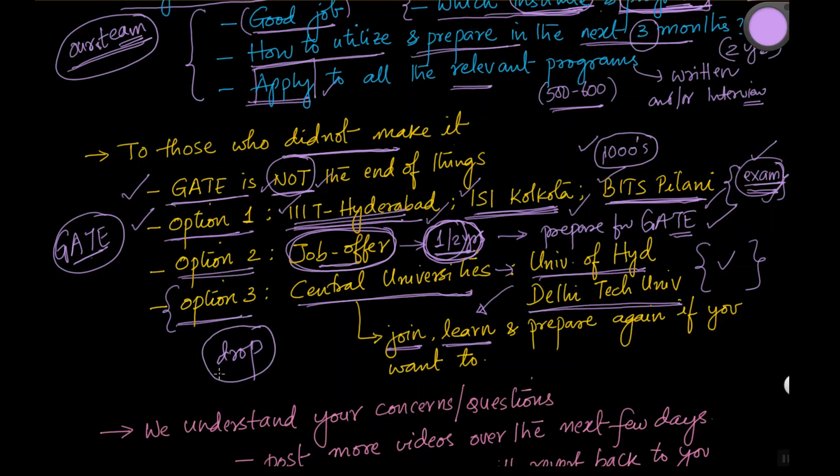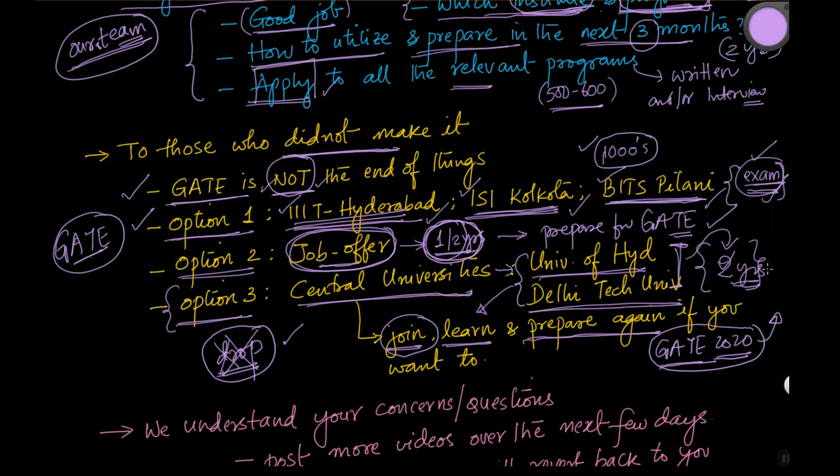Please go join these institutes instead of dropping a year. So a lot of students tell us that we want to drop a year. Our recommendation is, if you can get some of these good universities, join these universities, continue your learning. Because you've just missed gate, probably because of a few marks here and there, continue your preparation if you want to. If you're like, I'm not happy with these institutes, I really want to try again, you can join there and try again. Now when you try again next year, let's say for gate 2020, suppose you get a good rank, you can always move to another institute that you choose to.